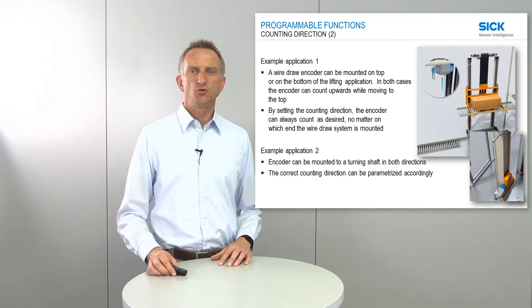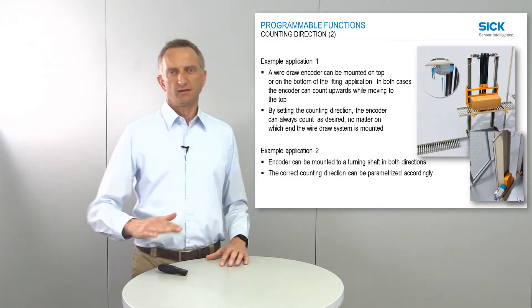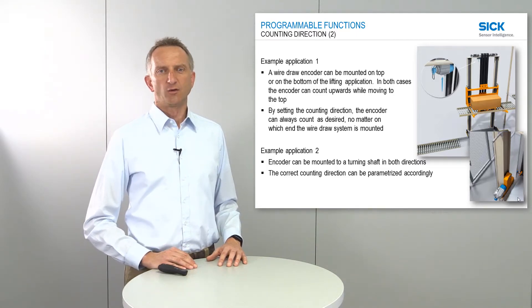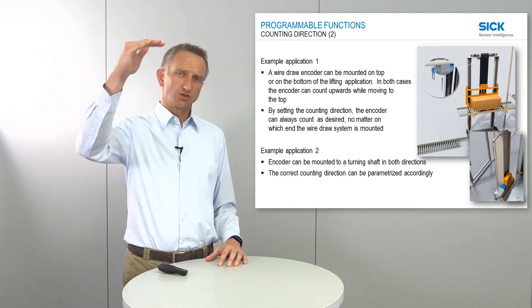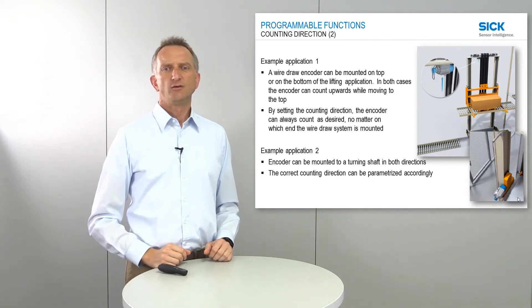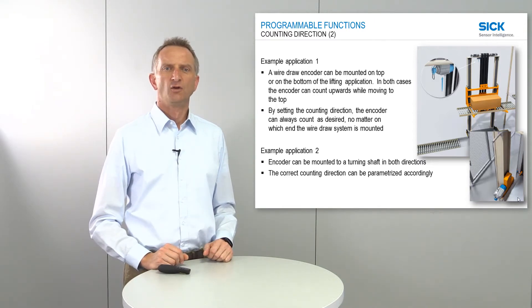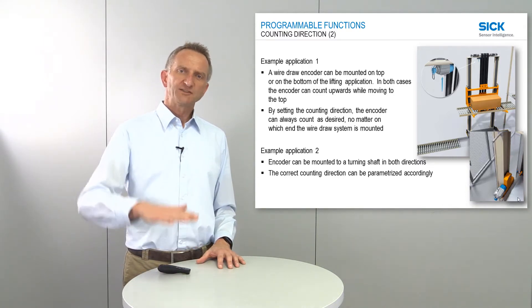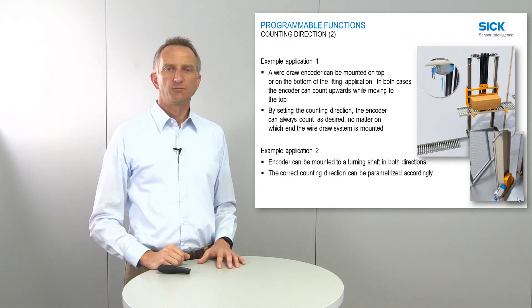Looking at how this can be used in an application, you see here a picture of a lifting application where we can typically use a wire draw encoder. The wire draw encoder can be mounted on top, bottom, left, or right of the application. No matter where the best mechanical position is, we can easily adjust the counting direction so that lifting upwards always counts in the positive direction.